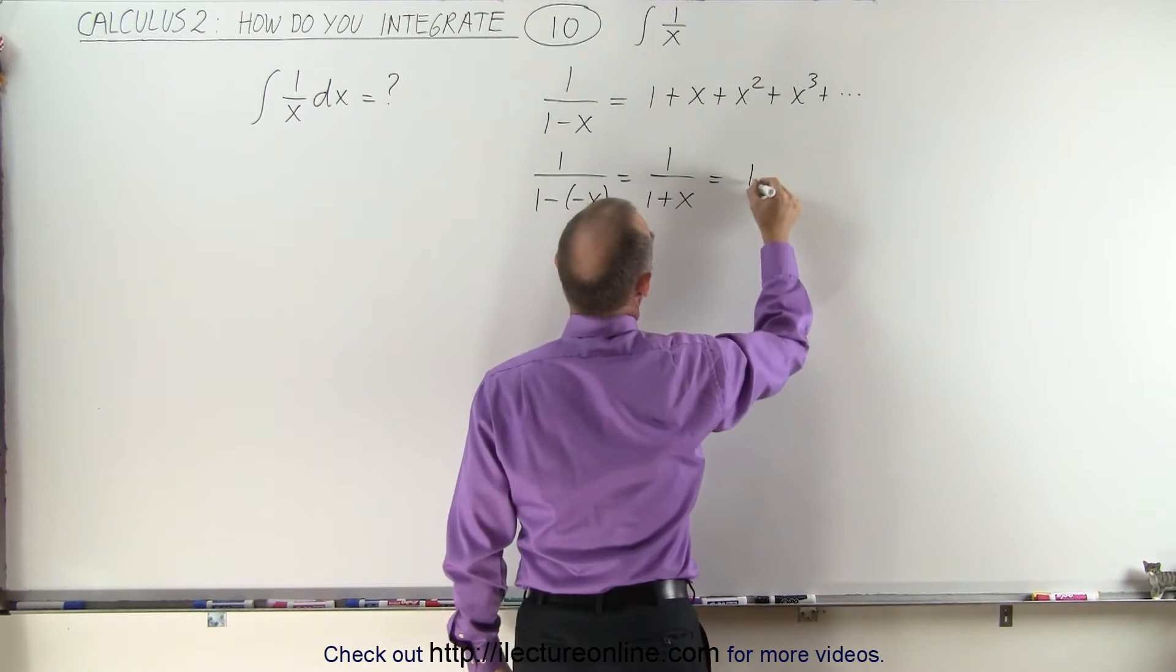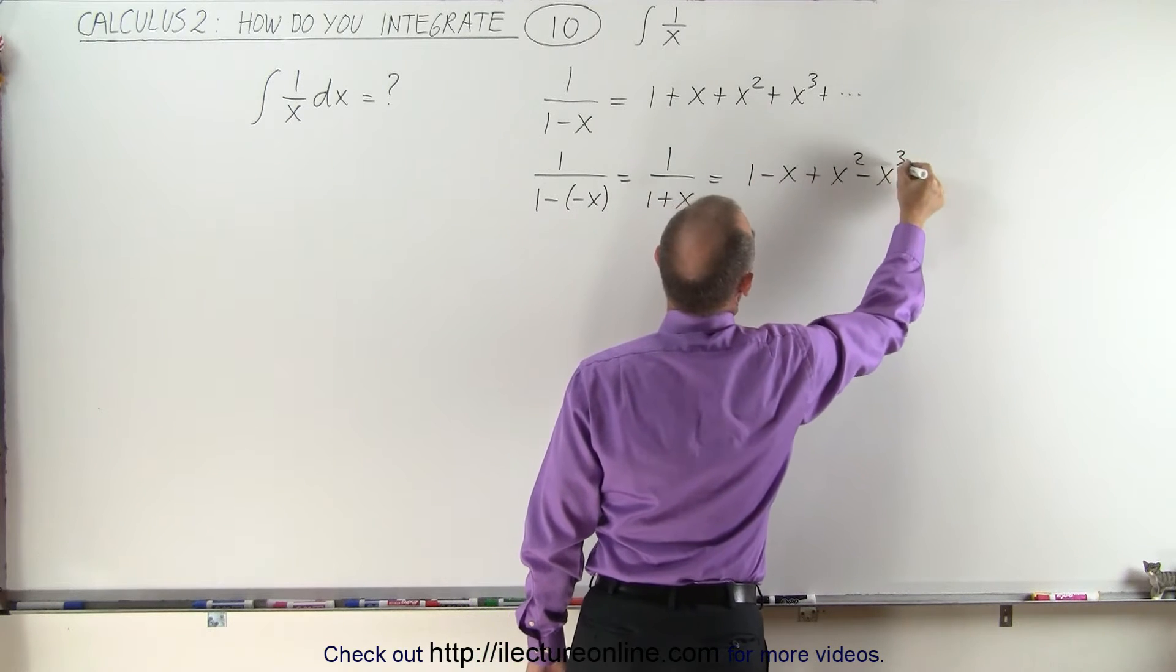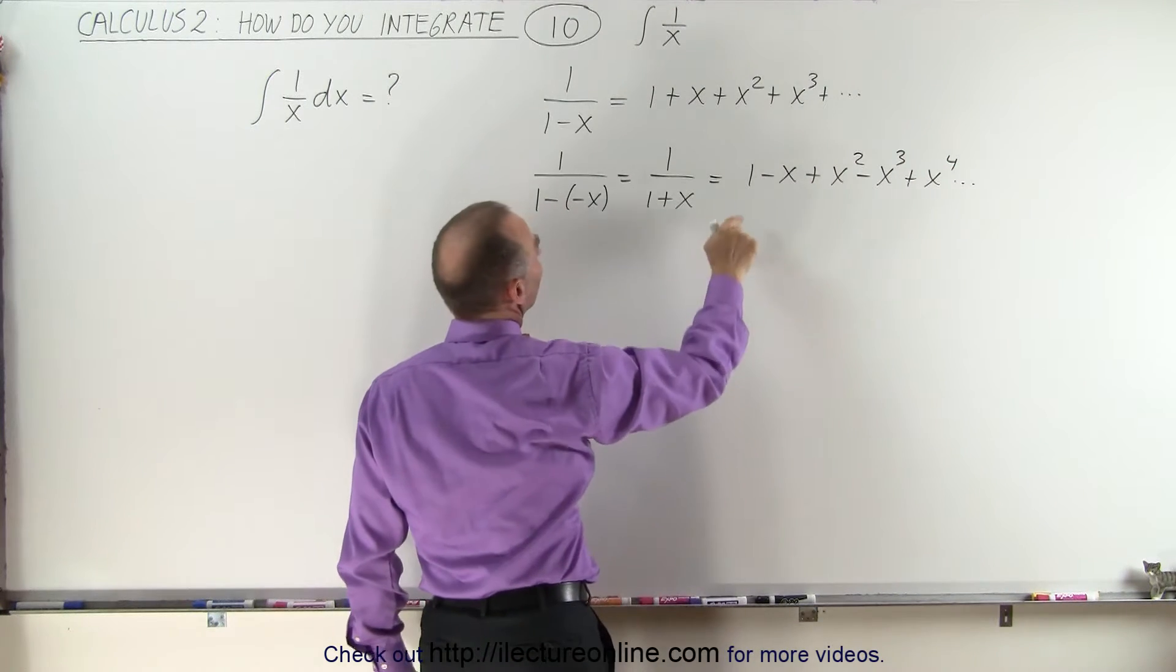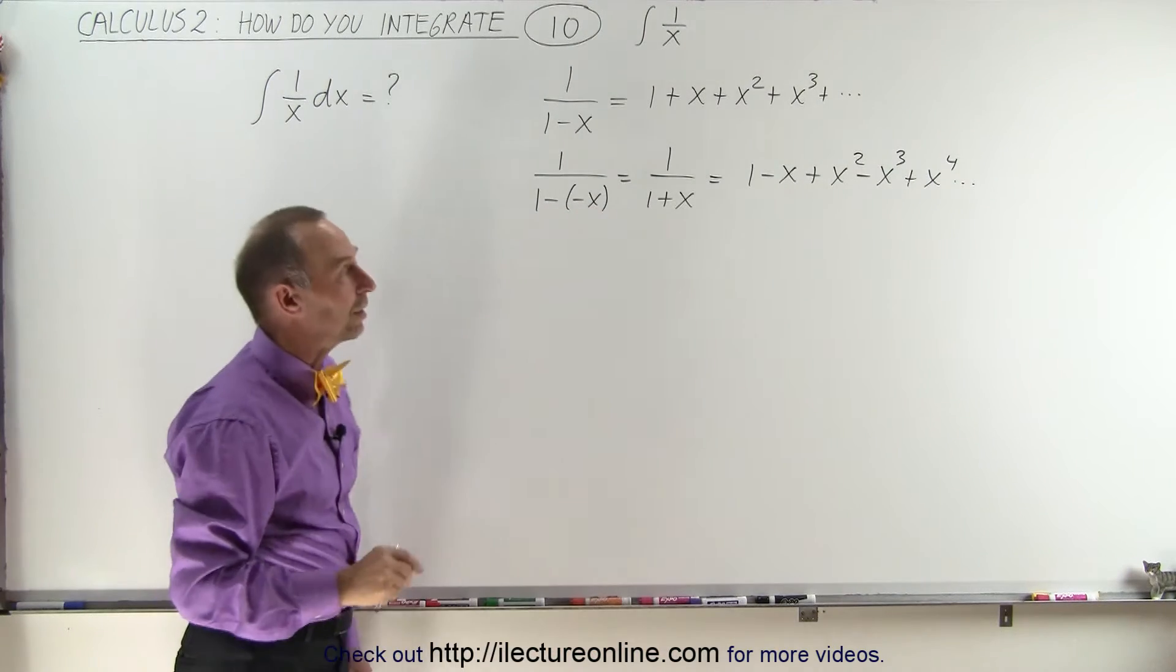And that can then be written as 1 minus x plus x squared minus x cubed plus x to the fourth and so forth. Because you can see that whenever we have an odd exponent, it becomes negative and an even exponent remains positive.